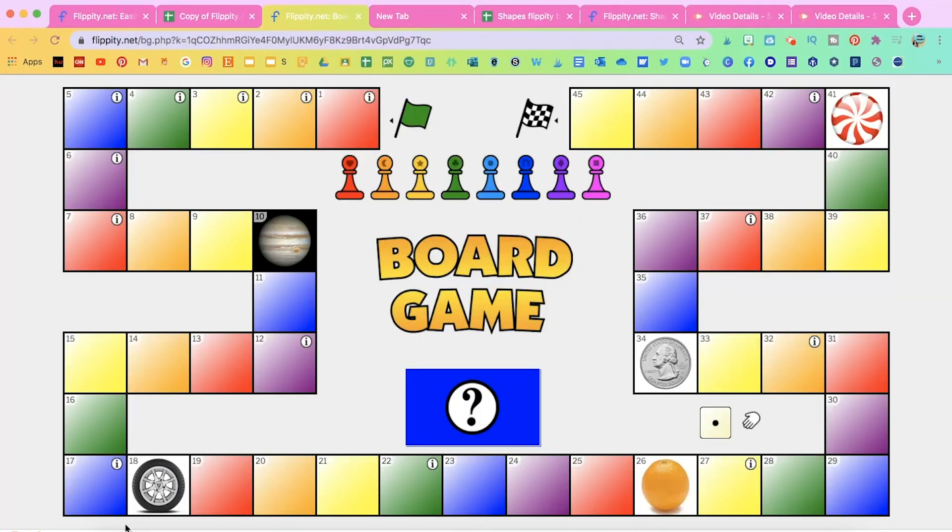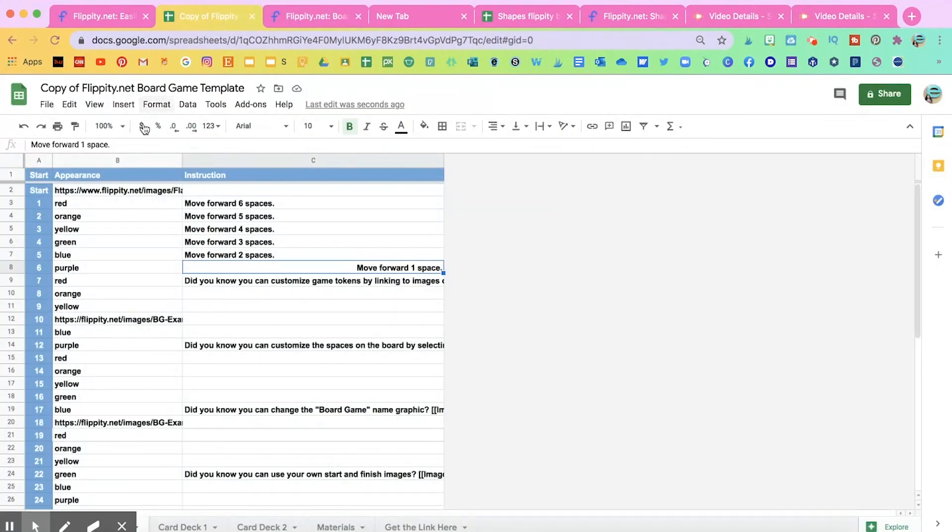The first thing I want to edit are these pictures here. Like the tire and the coin. And I want to make it something that is more appealing and engaging for my students. And those images are going to be on your spreadsheet here. They're going to be where it says appearance under the column B. So you'll see these links here. And I'm going to change these links to the visuals that I want.